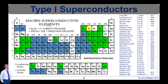Many additional elements can be coaxed into a superconductive state with the application of high pressure. For example, phosphorus appears to be the type 1 element with the highest TC, but it requires a compression pressure of 2.5 megabar to reach a TC of 14 to 22 Kelvin. This list is for elements at normal ambient atmosphere pressure. See the periodic table below for all known elemental superconductors, including niobium, technetium, and vanadium, which are technically type 2 superconductors.